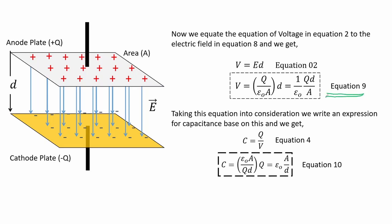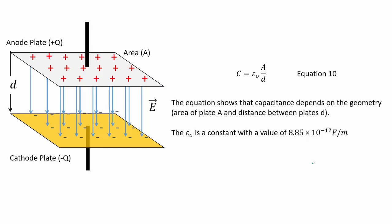Taking this equation into consideration, we write an expression for capacitance, obtaining capacitance as a function of a constant and the dimensions of the plates. The equation shows that capacitance depends on the geometry: the area of plate A and the distance between plates D.